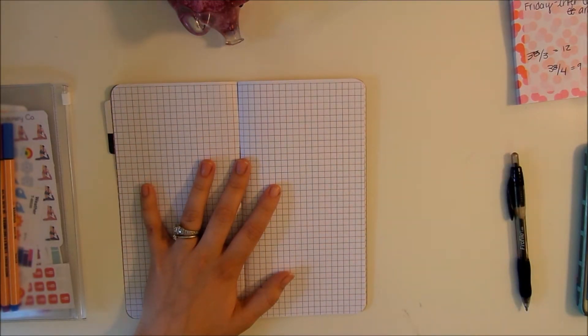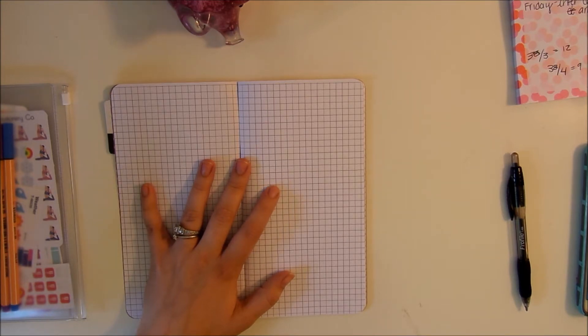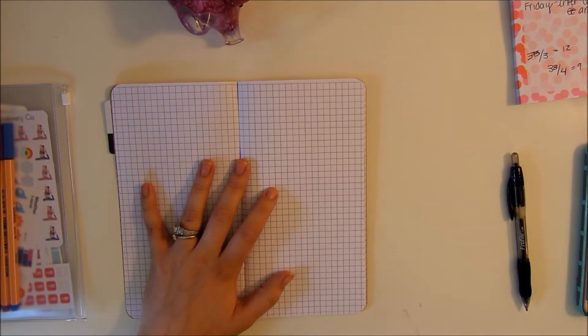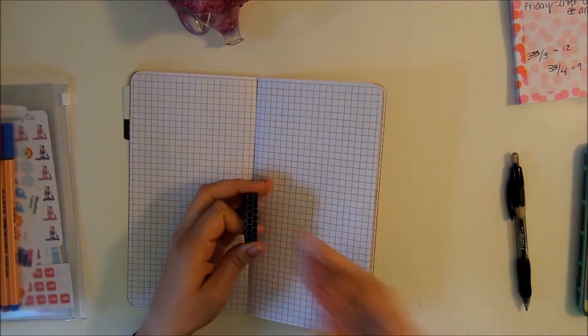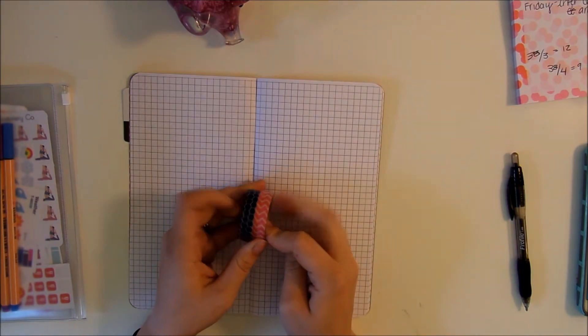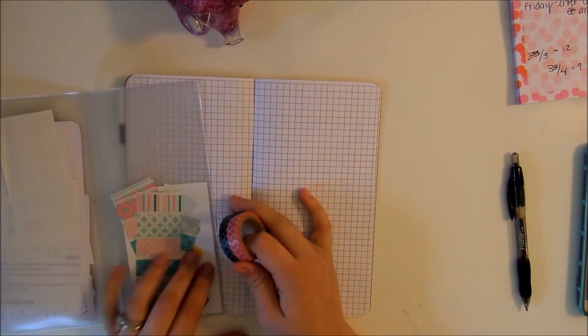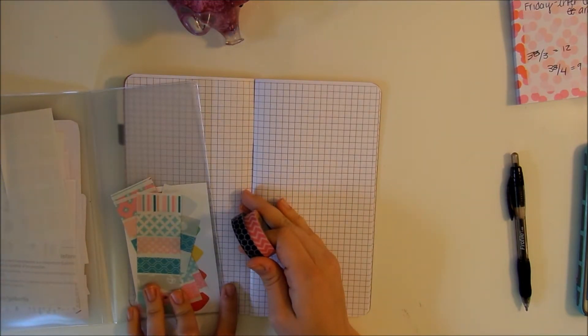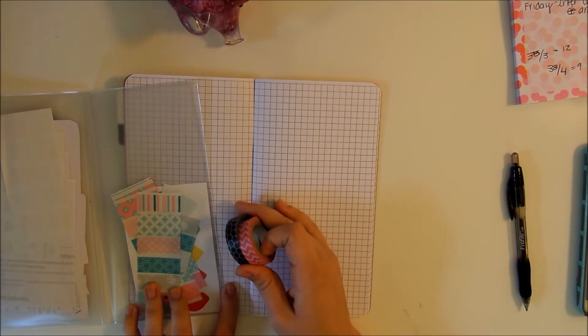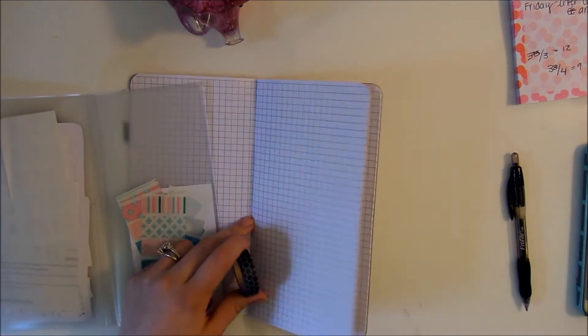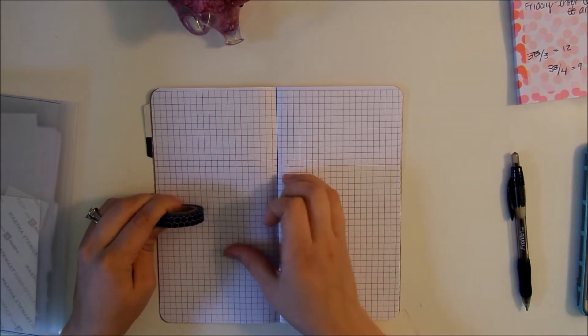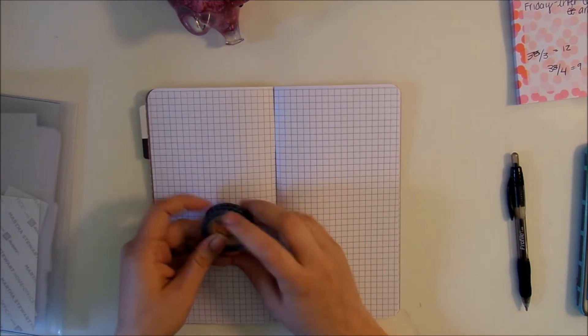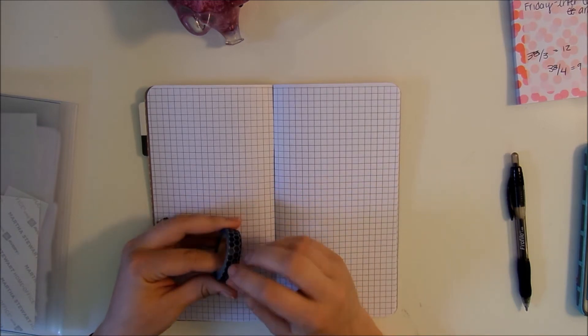I'm going to go ahead and pull out a washi tape. I don't know which washi tape I want to use this week. I'm thinking I want to go with a thin washi. We're either do this one or this one or maybe I'll mix and match the two. I think I'm going to do the blue. Because each day gets 12 on this side and this washi takes up about two boxes, it's not going to be completely correct but that's okay, not a big deal.